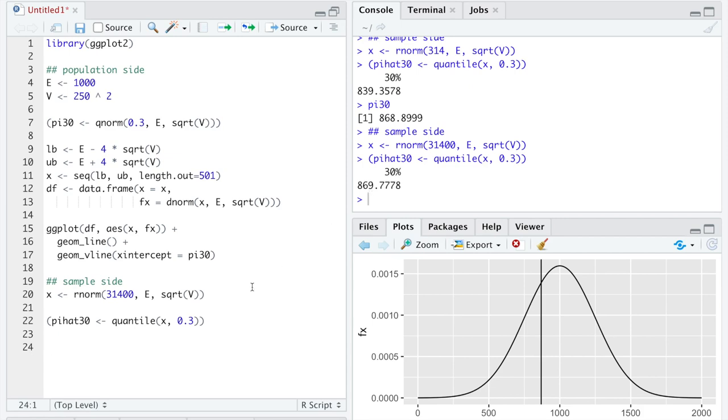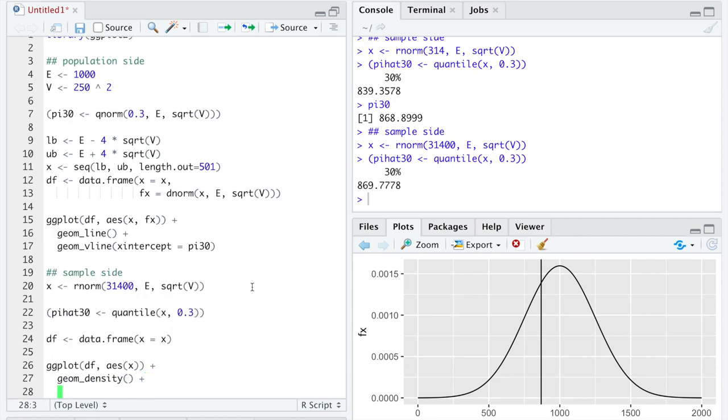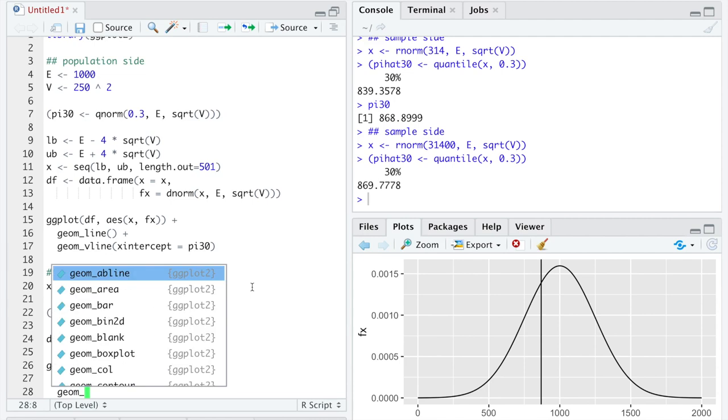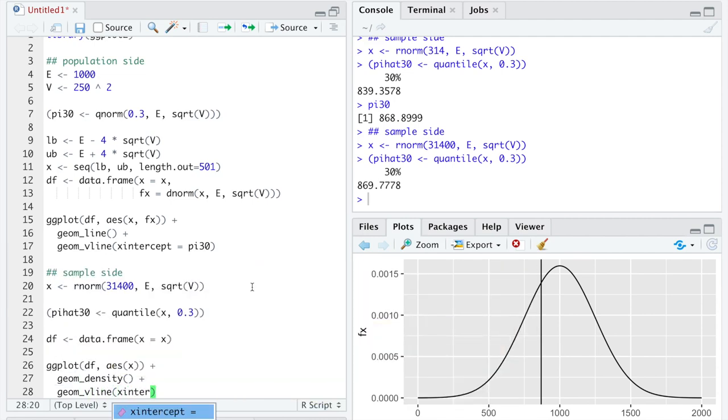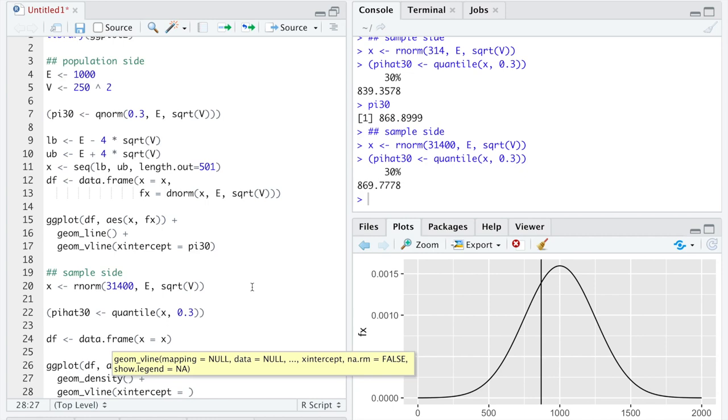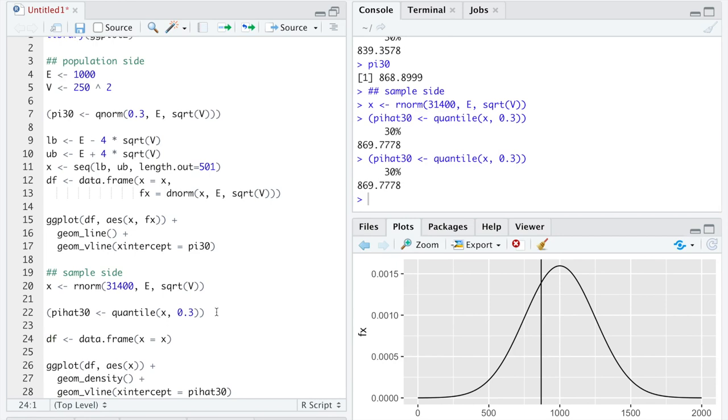Now, if you just want to check out what this would all look like on the sample side, we could similarly estimate all of these population parameters using our sample of now with the increased sample size. We have 31,400 observations estimating π 30 with the estimate π hat 30.